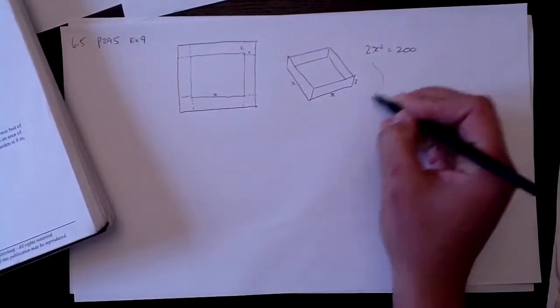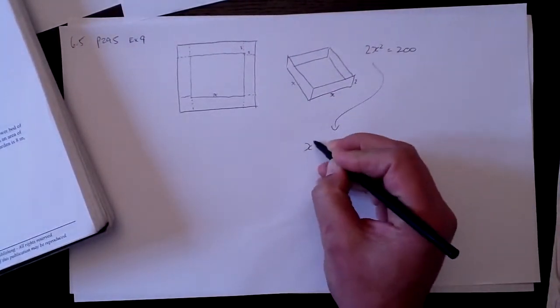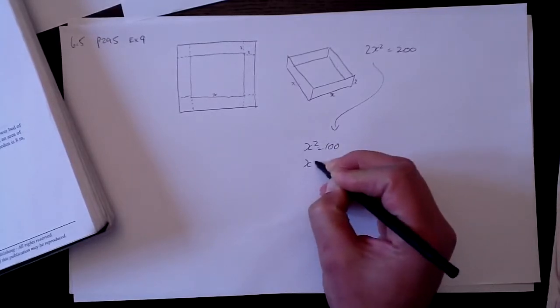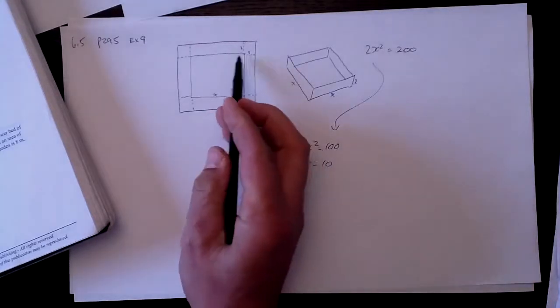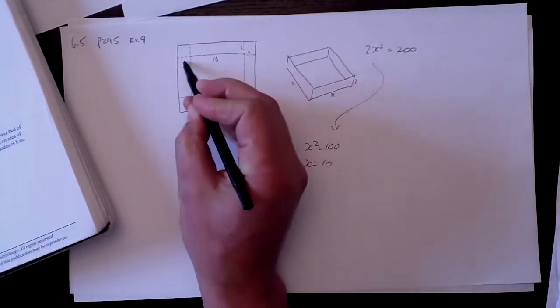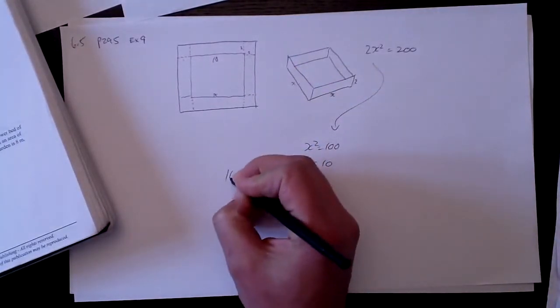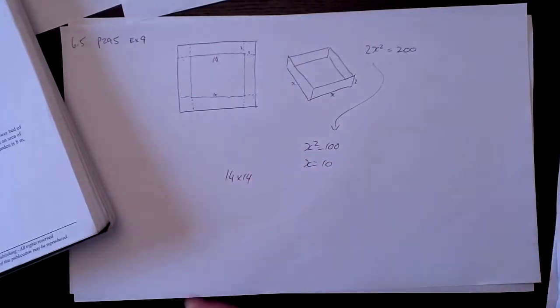So 2x squared equals 200. Solving that, x squared equals 100, x equals 10. So the original piece of cardboard was 10 here, plus the 2 there, plus the 2 there. So the original was 14 by 14 centimeters.